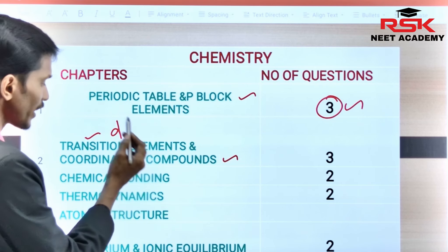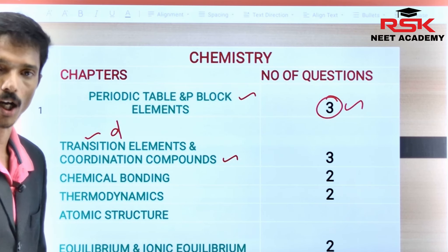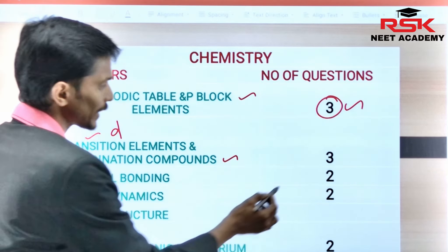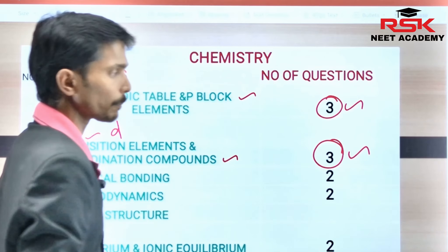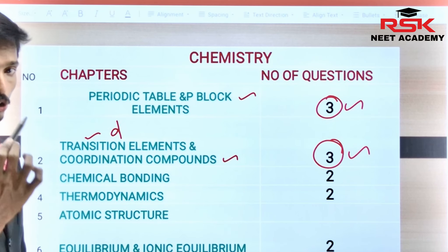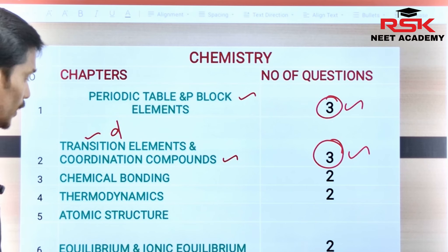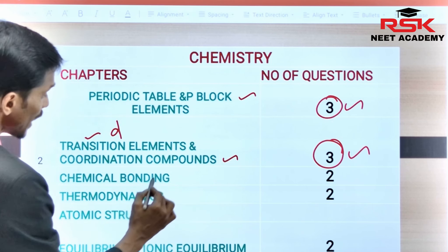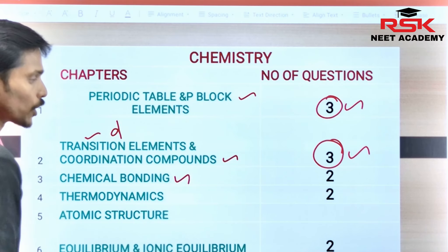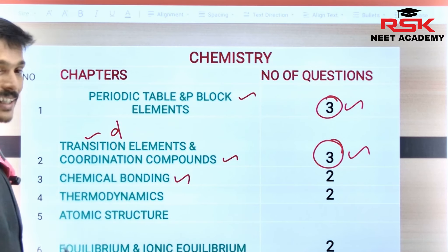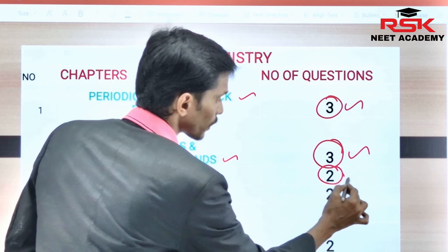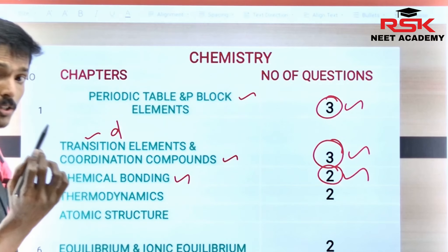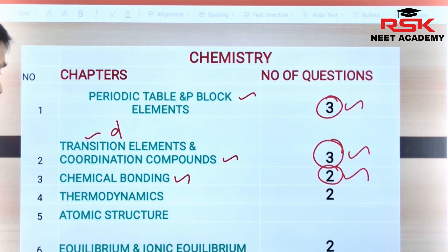If you continue to learn more about coordination compounds, there are several questions that can be possible — three questions are possible. For chemical bonding, this is a very easy lesson, and the maximum questions possible are two.